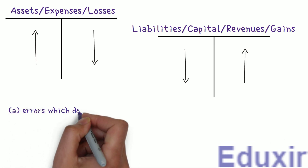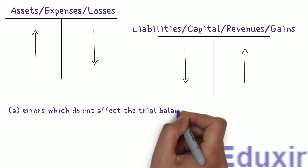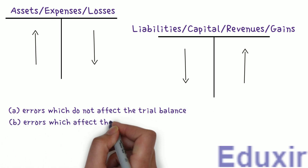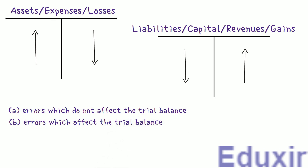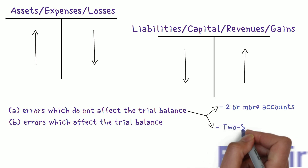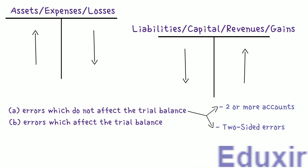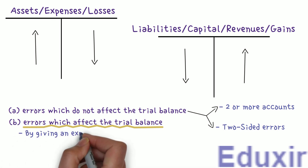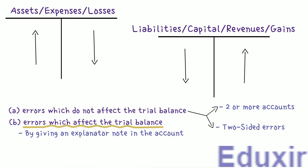Errors which do not affect the trial balance - we have already seen these in previous problems. They are usually committed in two or more accounts and are also known as two-sided errors. They can be rectified by recording a journal entry giving the correct debit and credit to the concerned accounts. However, in this problem we are going to deal with errors which affect the trial balance. These errors affect only one account and can be rectified by giving an explanatory note in the affected account, or by recording a journal entry with the help of the suspense account.